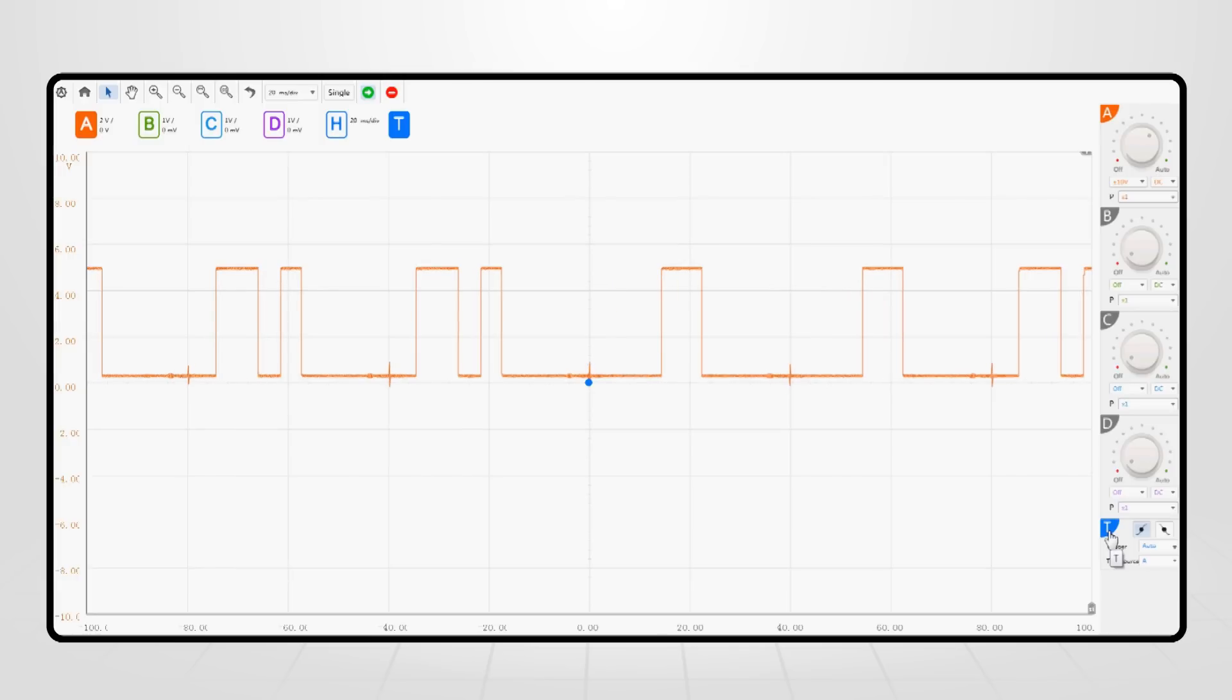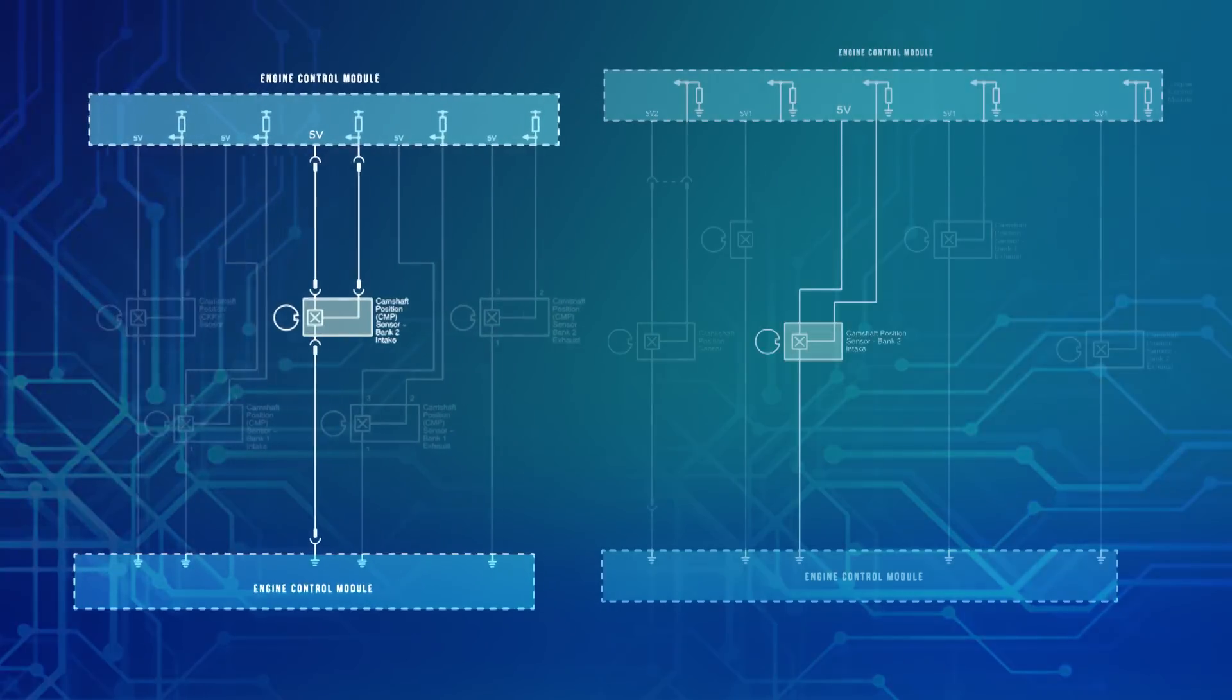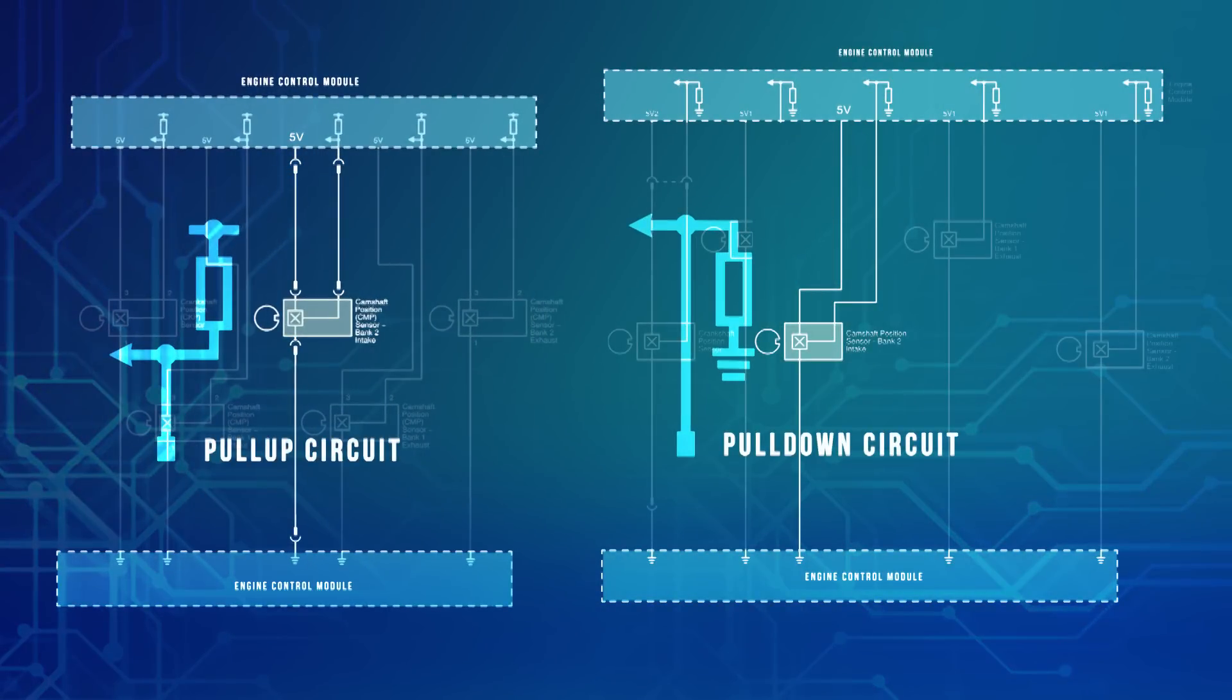While newer engines now use a digital on-off Hall effect sensor for their increased speed and reliability. This sensor is supplied with a high and low reference, with the sensor returning the signal to the ECM. OEMs may choose to use either a pull-up or pull-down circuit for monitoring the signal output.